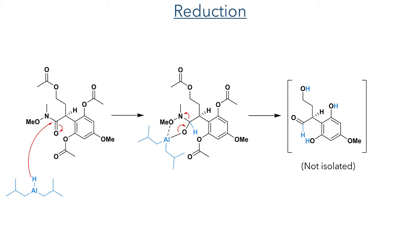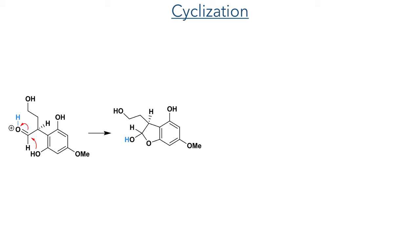Having served its purpose, the amide could now be removed, and this was carried out by reduction with DIBAL-H. This reagent adds a hydride to the carbonyl centre and promotes the reduction of the amide to an aldehyde. This reaction also occurred at the acetate esters, forming a transient triol aldehyde which was not isolated. Instead, it was reacted with hydrochloric acid, which promoted the cyclization to form the tricyclic fragment containing the A, B, and C rings. This occurs by first protonating the aldehyde, making it more electrophilic, allowing for the intramolecular attack of a hydroxy group found on the aromatic ring.